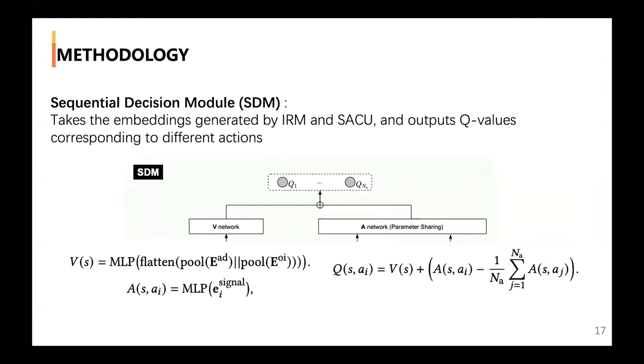The fourth part is the SDM. With the help of SSU and MSU, the SDM takes the embedding determined by IRM and candidate actions as input and outputs the Q-Value corresponding to the different actions.